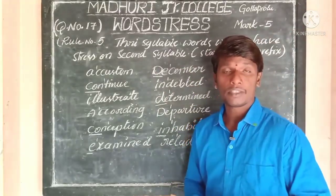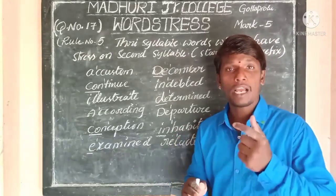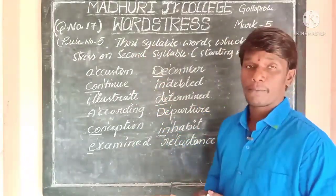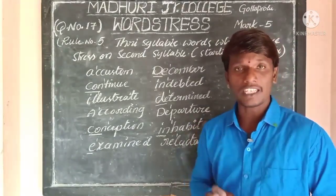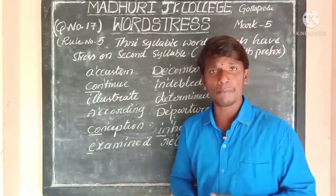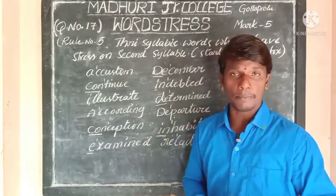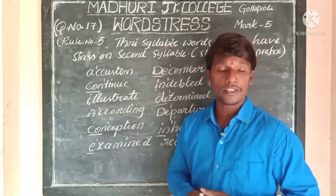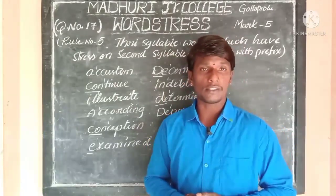These are the rules we need to study carefully and keep in mind to make stress on particular syllables in particular words. Rule number 5 talks about trisyllabic words which are started with prefixes — these have stress on their second syllable. Disyllabic words have stress on their first syllable, but if the same disyllabic words start with prefixes, stress is on the second syllable. I hope you understand this class, and we shall continue tomorrow. Thank you very much.